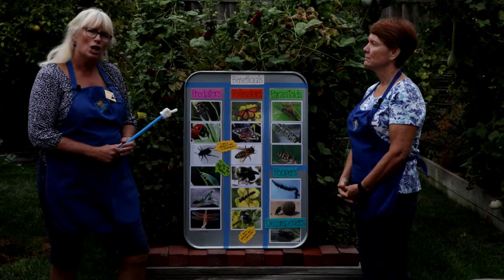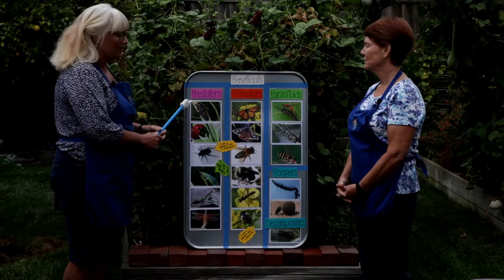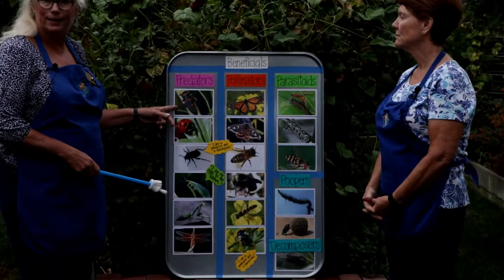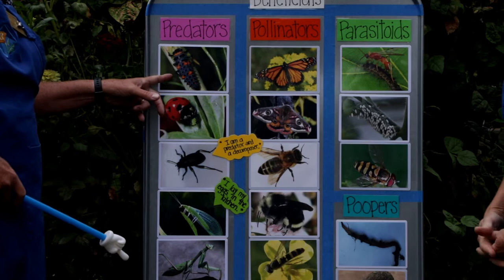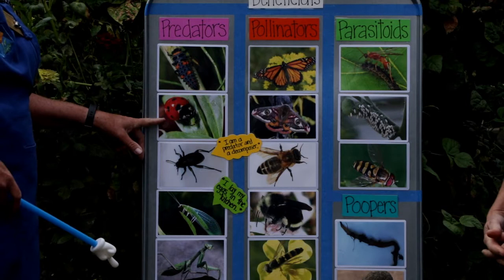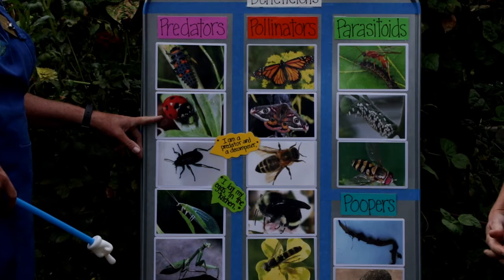Predators actually chomp and chew the harmful insects that will eat your plants. This little alligator-looking thing is a ladybug larva — they are voracious eaters of harmful insects. Their favorite insect is an aphid, and they can eat their body weight in aphids every day. The grown-up ladybug or ladybird beetle eats over 50 aphids each day, so that's a wonderful thing to have in your garden.